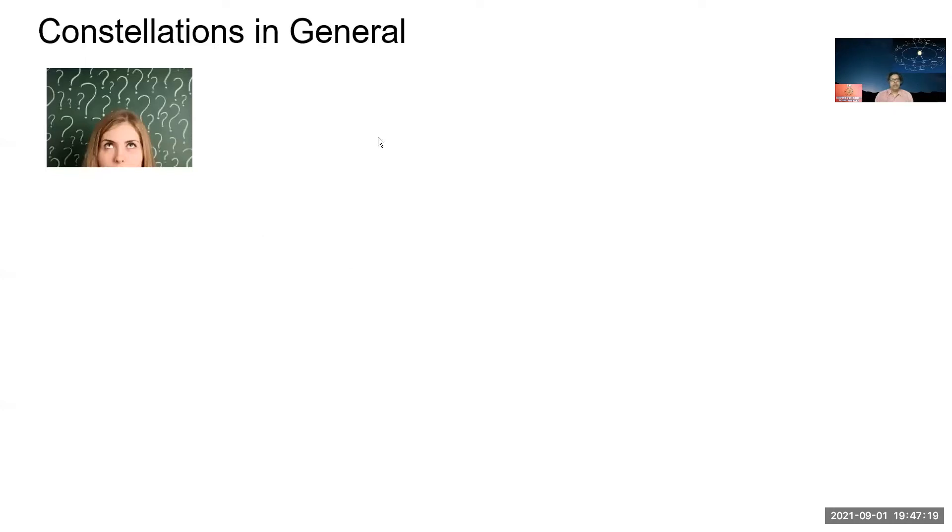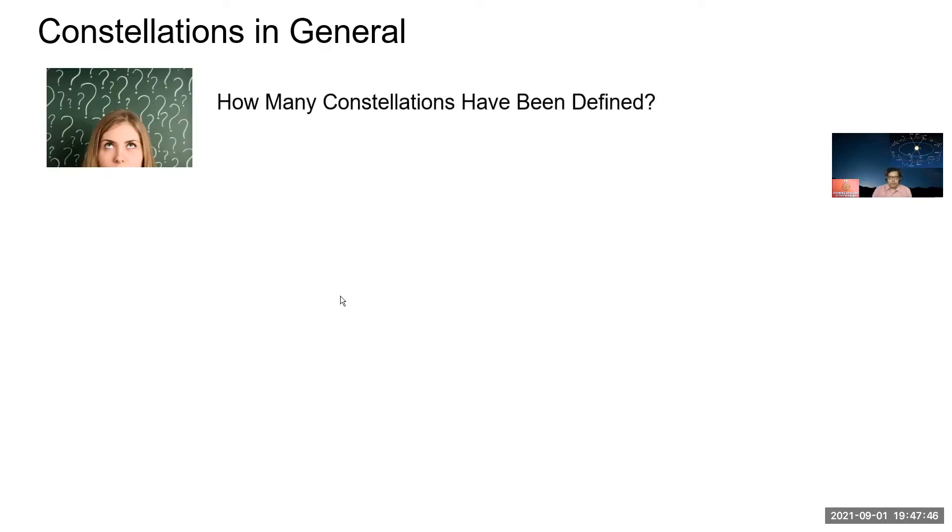And now we have something on constellations. How you define Uttarayan and Dakshinayan in the movement of sun? Yeah, can we take that later? So we have constellations in general.